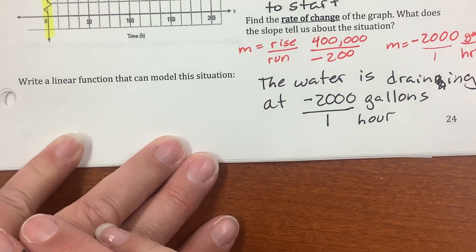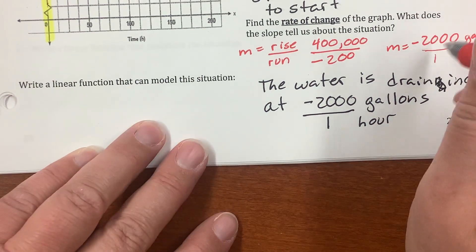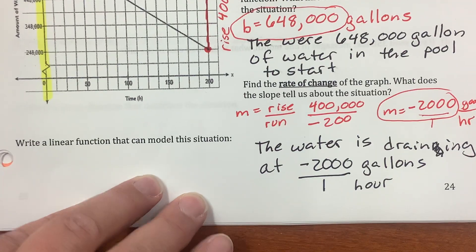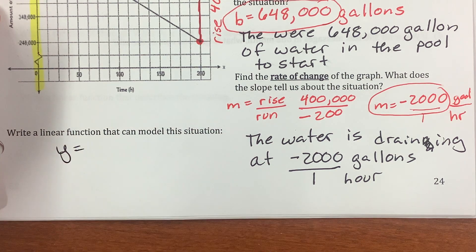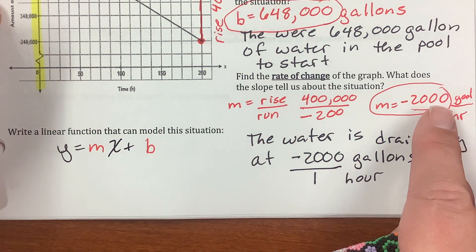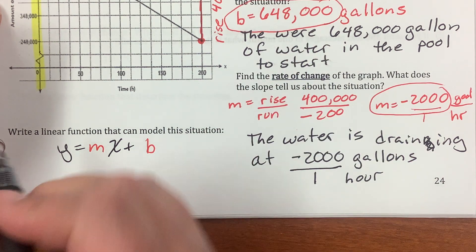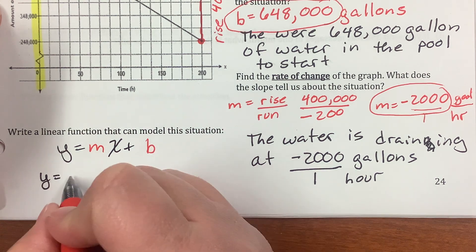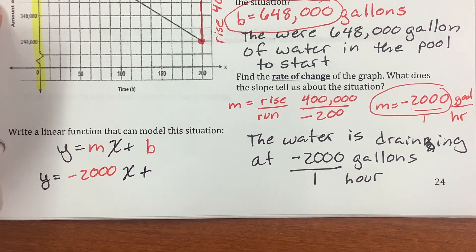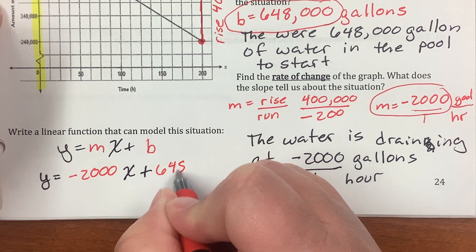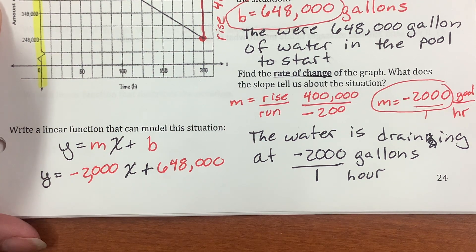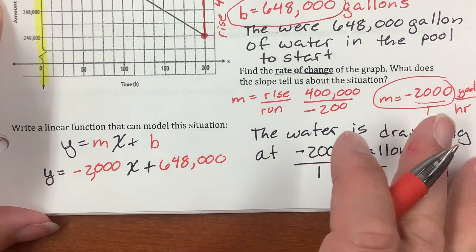Write a linear function that can model this situation. Well, what do I need for a linear function? I have the m is negative 2,000. I have the b is 648,000. So, I'm just going to write y equals mx plus b. And I'm going to fill in the negative 2,000 for m and the 648,000 for b. So, y equals negative 2,000 times x plus 648,000, the number of gallons that I started with.